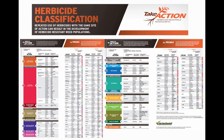The chart I'm referring to is the Take Action Herbicide Classification Chart that was developed by weed scientists across the north central region. We've been distributing this via funding from USB along with weed scientists in other states, so it's been fairly popular and does a couple things pretty well.